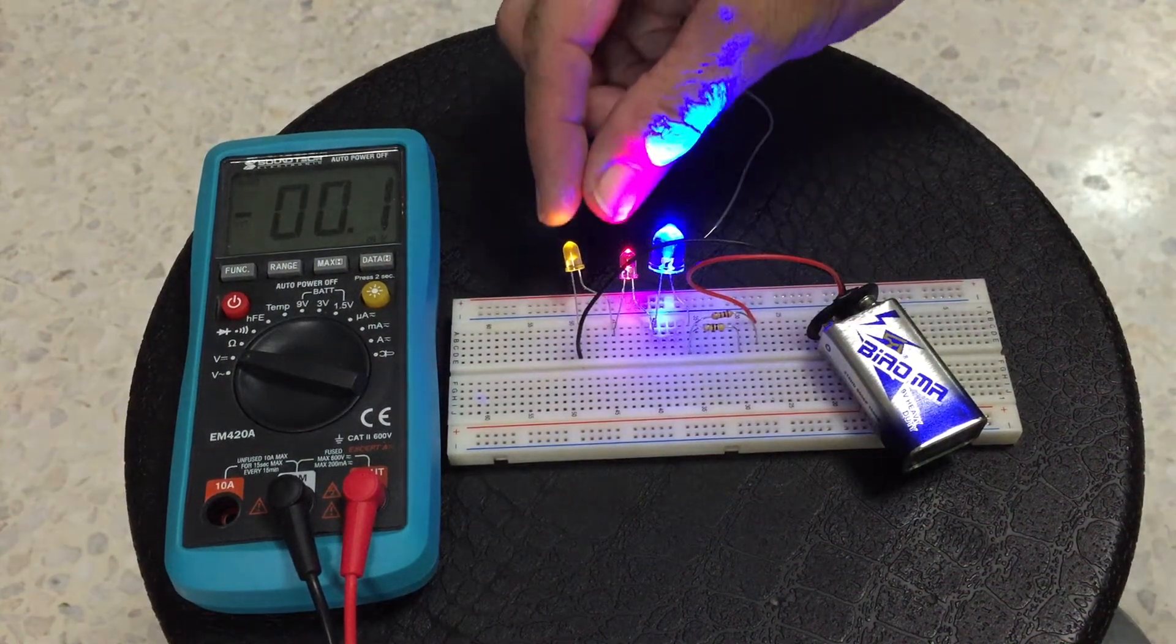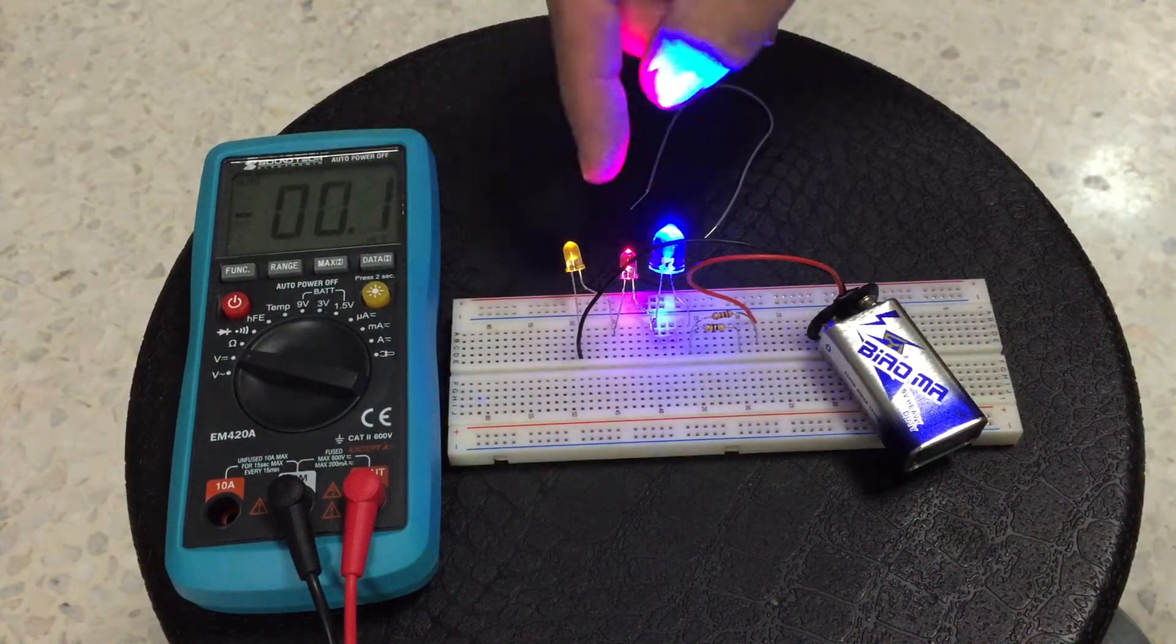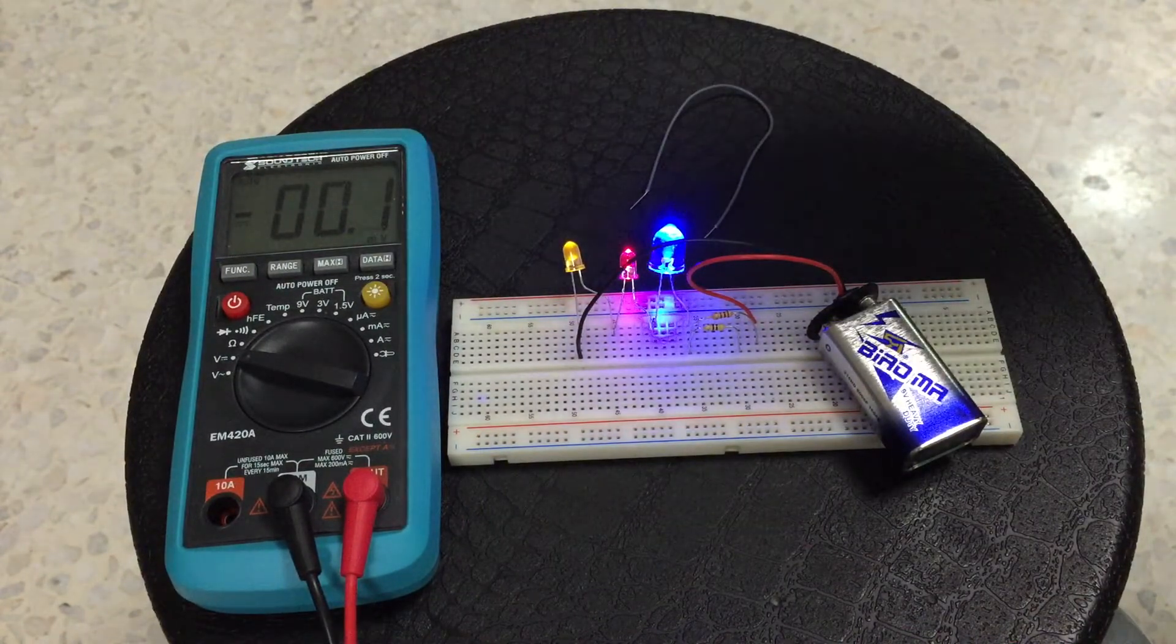You've just been seeing what the voltage is across each LED. That's how much electrical pressure there is across to make the current flow. But let's find out now how much current is flowing through.